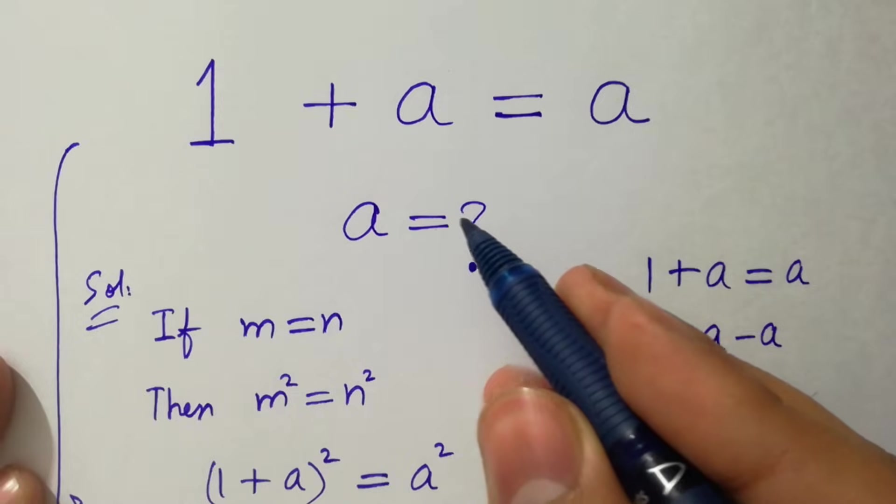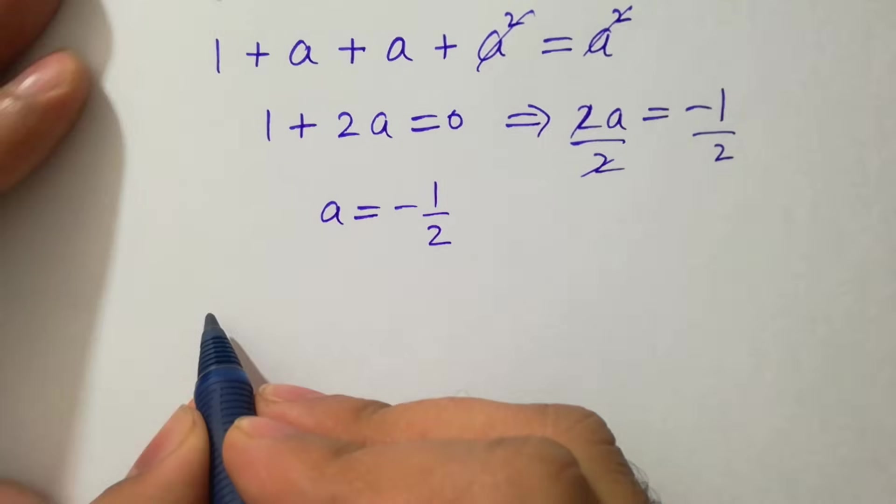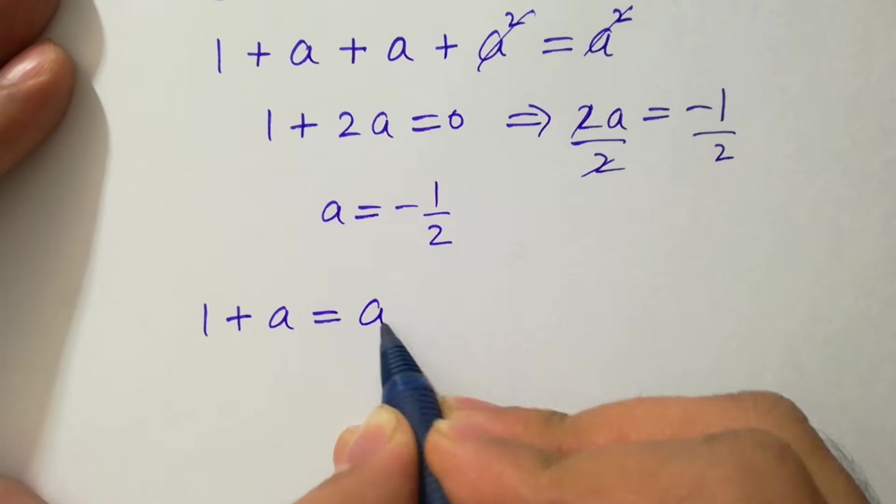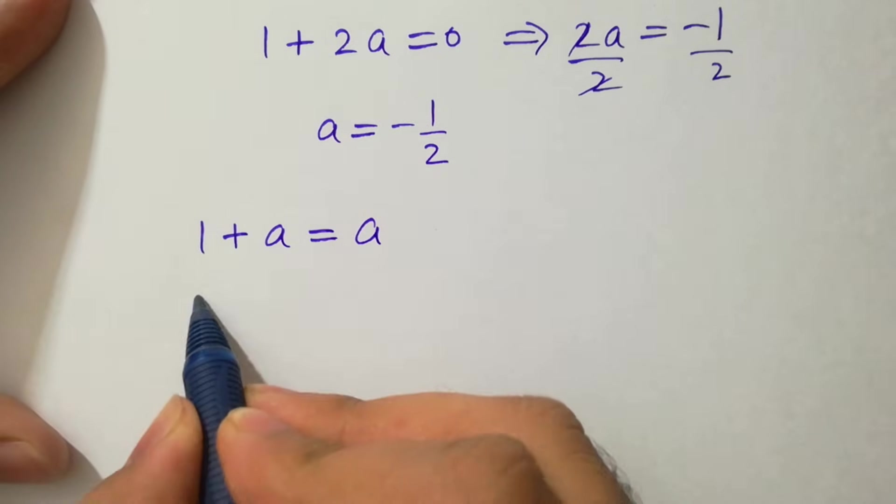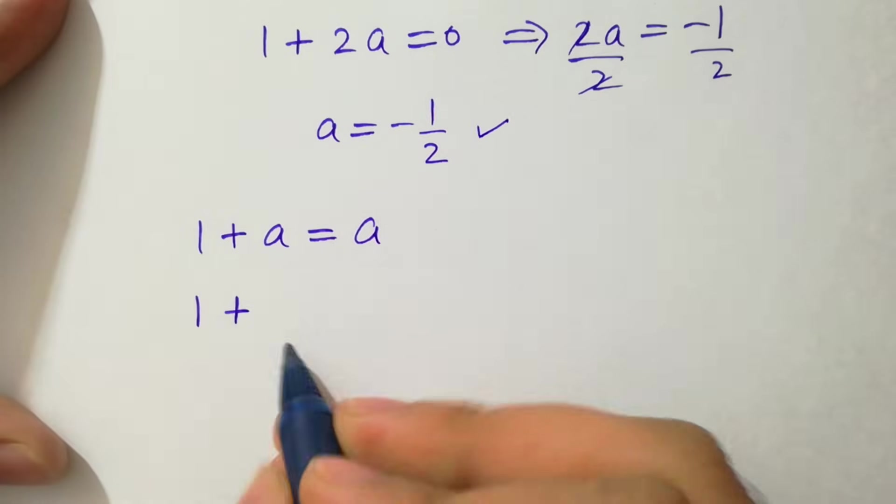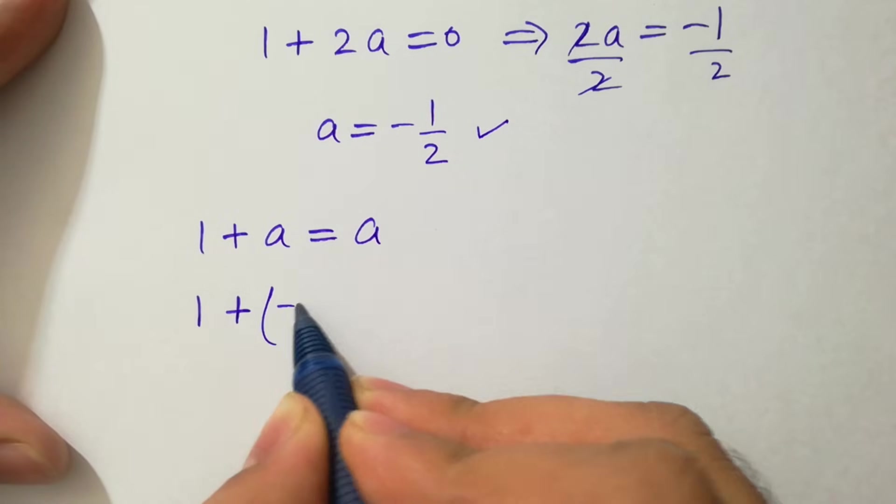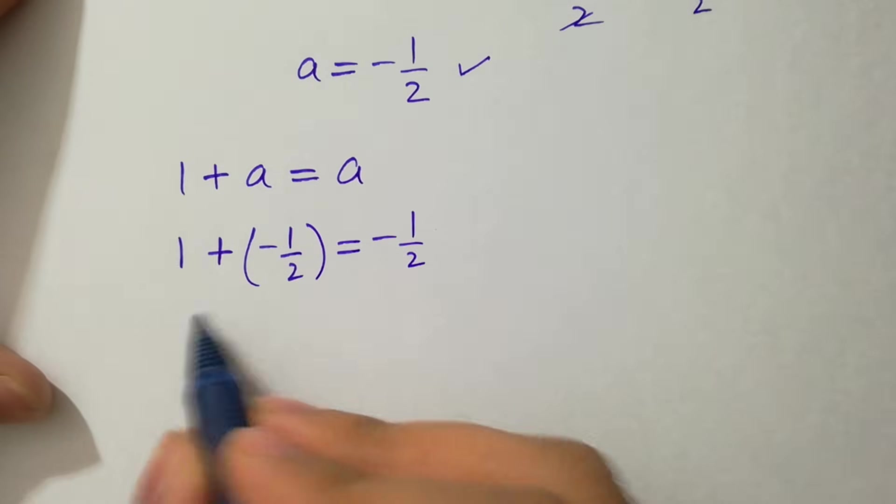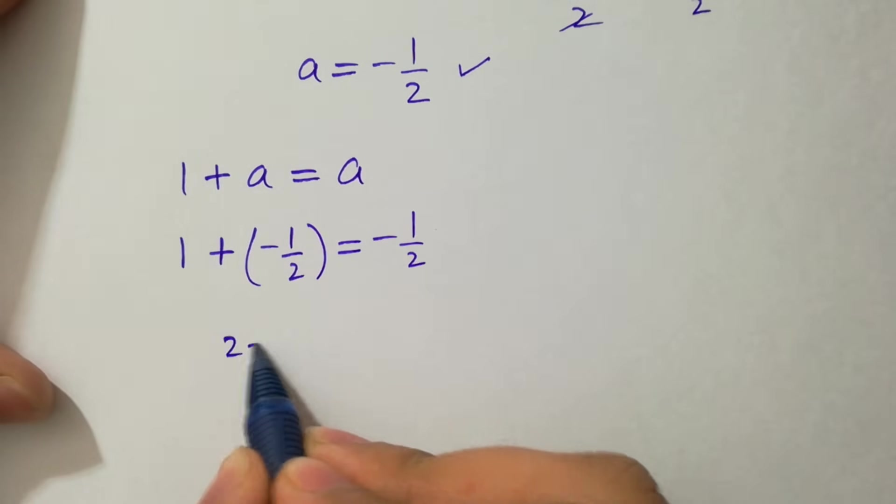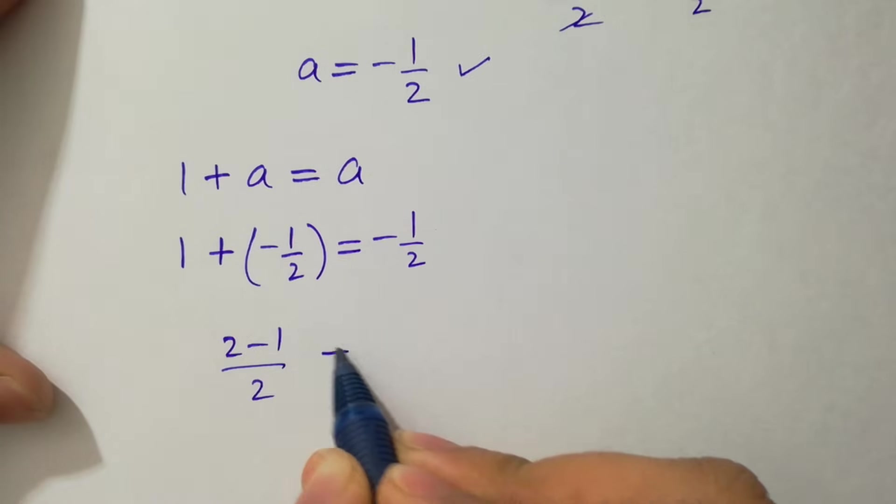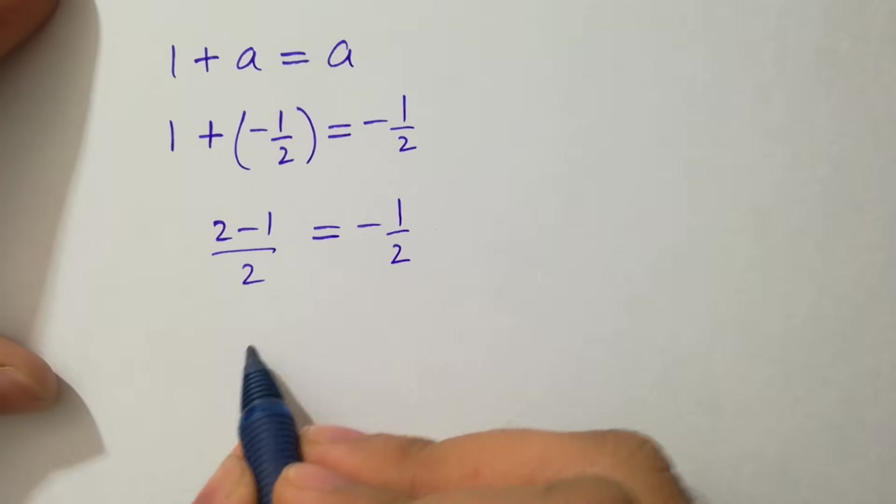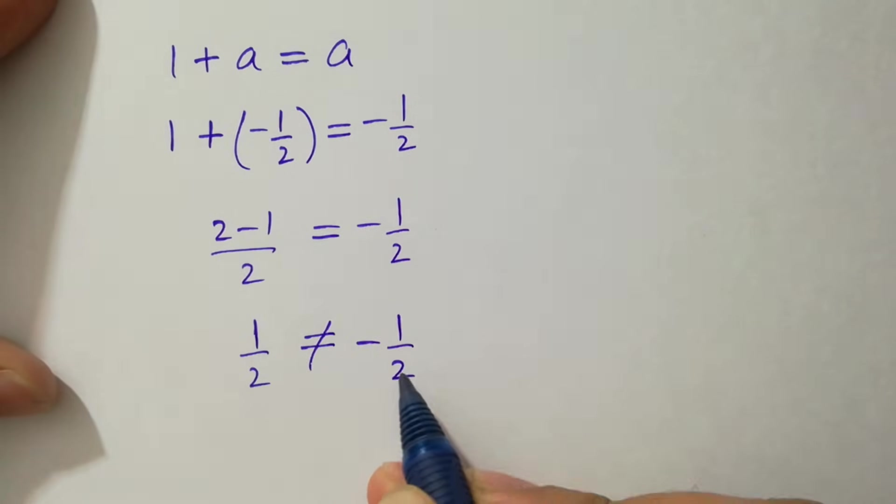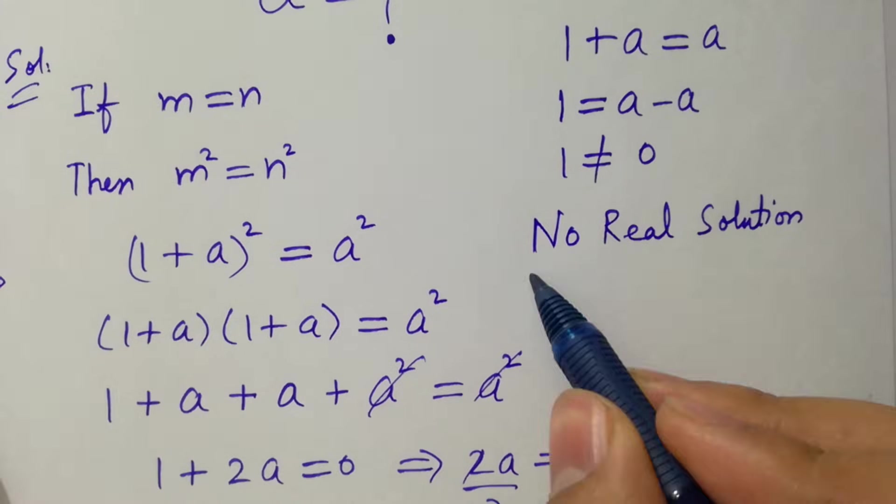Put it into the equation 1 + a = a. We have 1 + (-1/2) = -1/2. If you solve this, we have 2 times 1 minus 1 over 2 equals -1/2. 2 - 1 is 1, so 1/2, which does not equal -1/2. We show that this has no real solution.